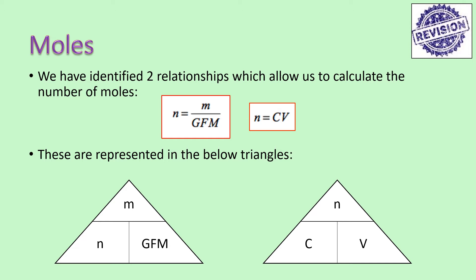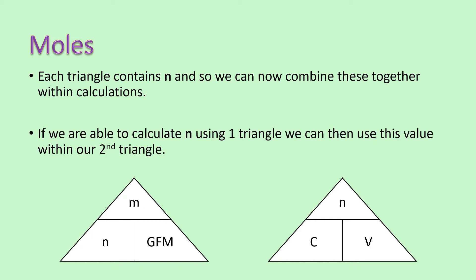Let's revise everything we've covered so far. We've identified two relationships which allow us to calculate the number of moles. The first is N equals M over GFM, where M is mass and GFM is our gram formula mass. The second is N equals CV, where C is concentration and V is volume. We've represented these in triangles, and what we can see is that both triangles contain N for number of moles. That means we can combine these together — if you calculate N using one triangle, you can use that value within the second triangle.